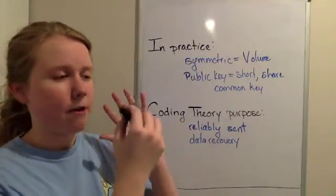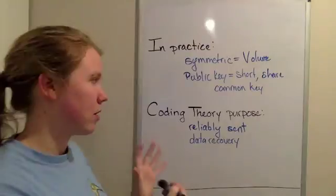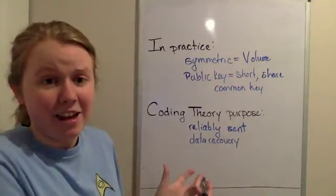So that is the purpose of coding theory. Cryptography is to get it encrypted and decrypted. Coding theory is so that you can actually send the data so it can be useful.